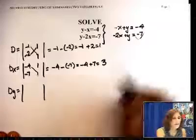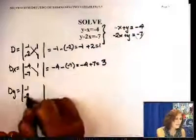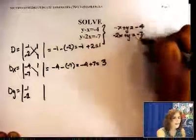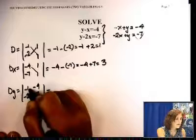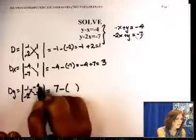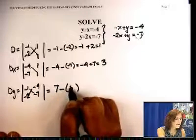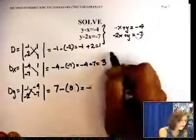Let's do the Dy. The x column stays as is, and instead of the y column, I'm going to put the constant column. Now let's cross-multiply, negative 1 times negative 7, that's 7, minus negative 4 times negative 2, that's 8. 7 minus 8 is negative 1.